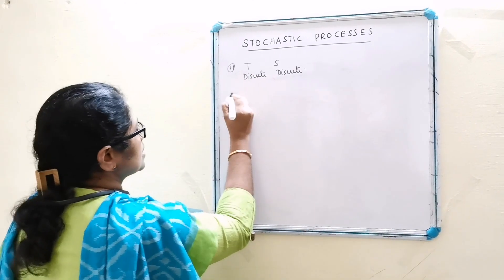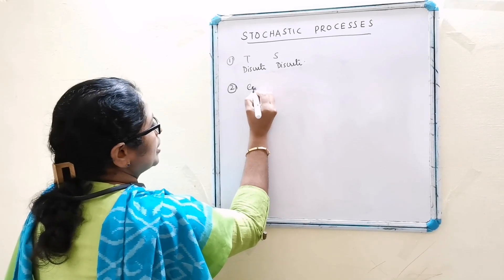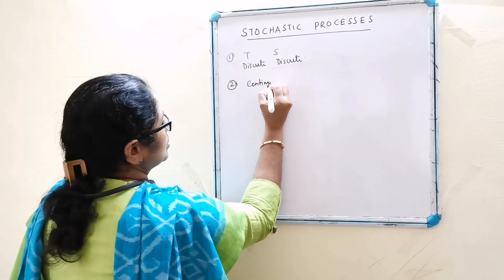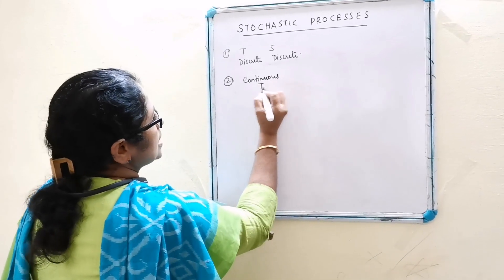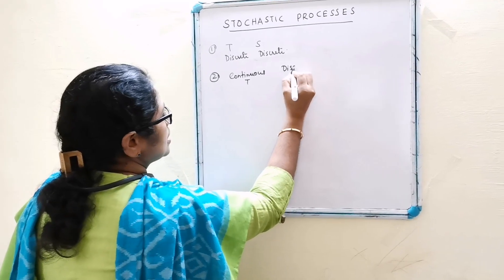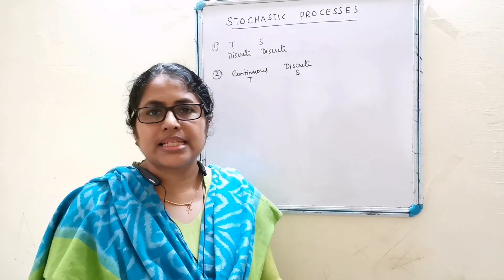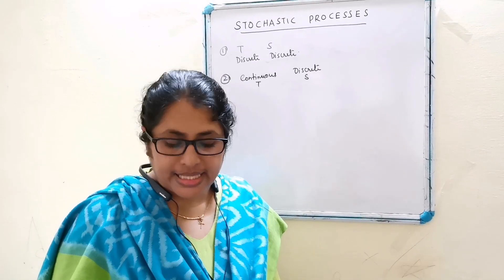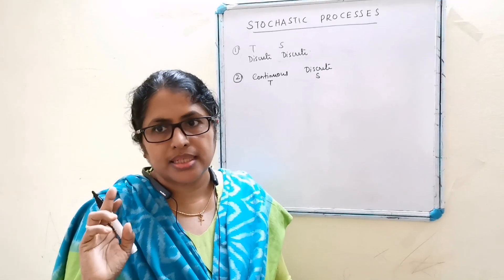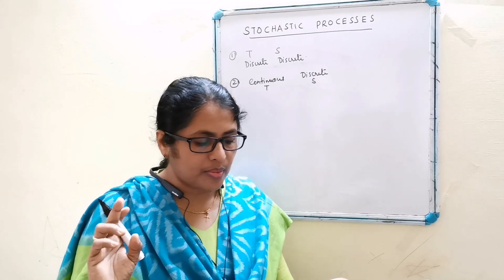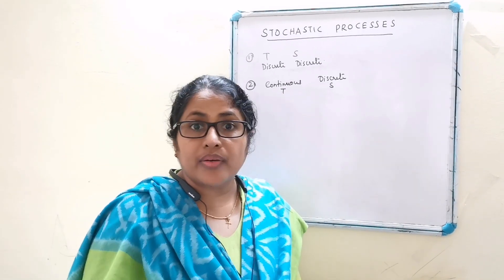The second type is continuous parameter, discrete process — that is, T is continuous while S is discrete. For example, let x(t) denote the number of accidents in the interval (0, t). Another example: the number of patients waiting for service in the interval (0, t).